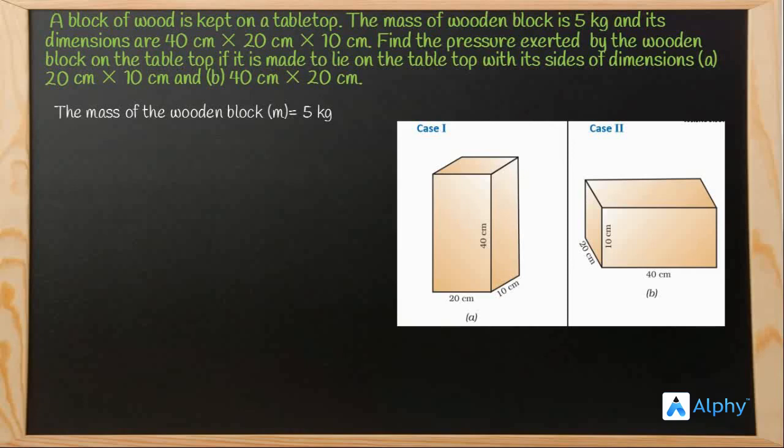So thrust is a type of force and we know that the formula of force is mass × acceleration due to gravity. Here m is 5 kg and we know acceleration due to gravity is 9.8 m per second square. So we can write F is equal to 5 kg × 9.8 m per second square that is 49 newton.